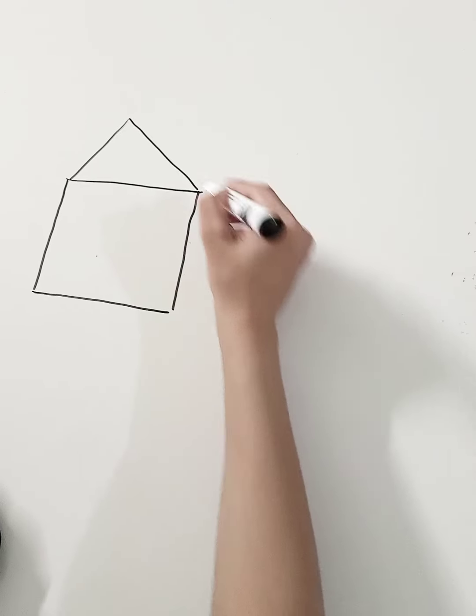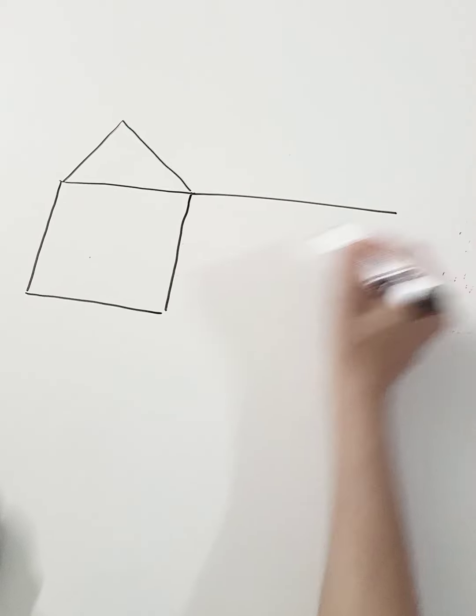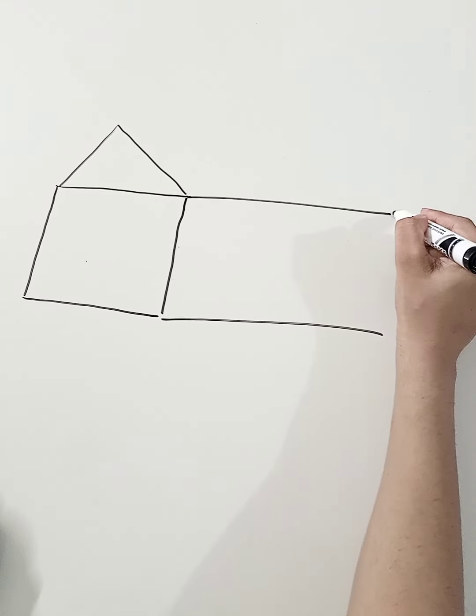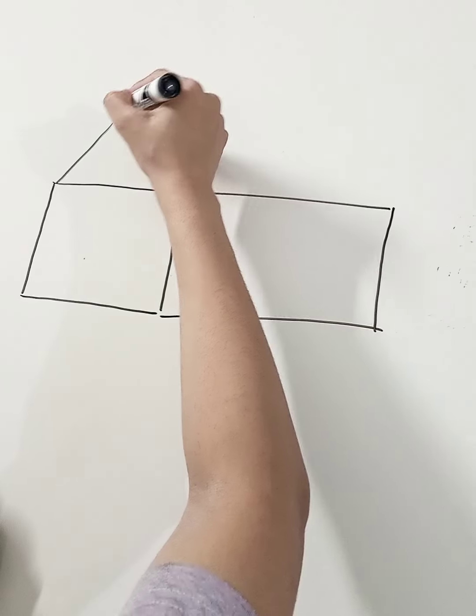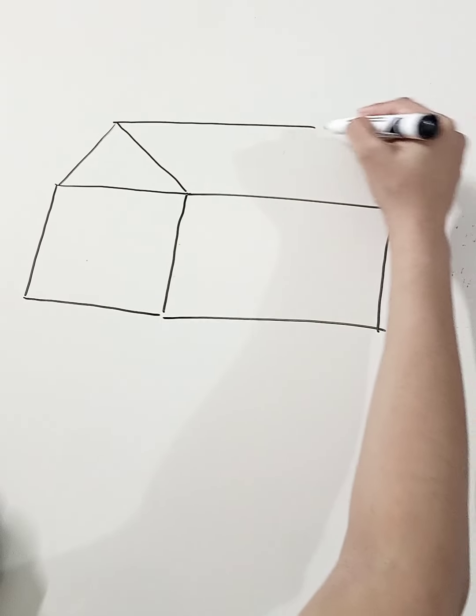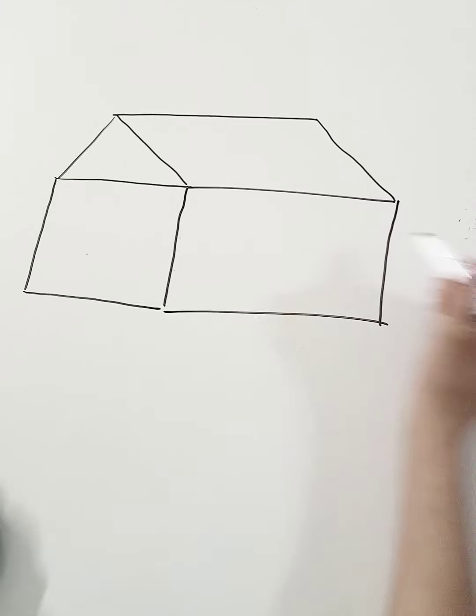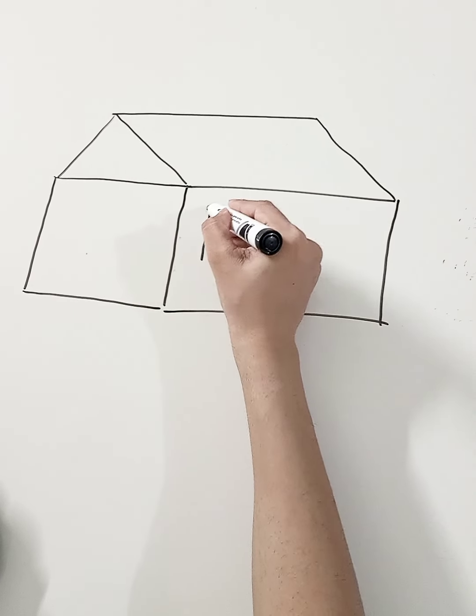Now draw a horizontal rectangle like this, then draw a parallel line. Now draw another rectangle inside.